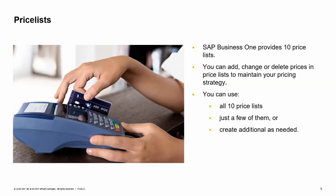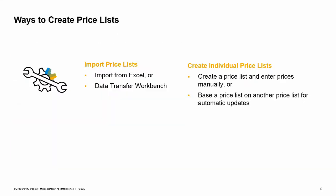SAP Business One provides 10 price lists. You can add, change, or delete prices in these lists to manage your pricing strategy. You can use all 10 price lists, use just a few of them, or create additional ones as needed.